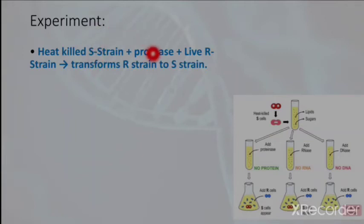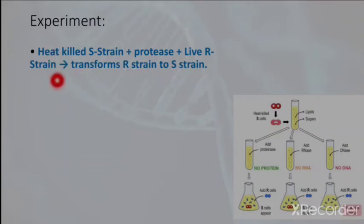Protease is an enzyme which is responsible for the digestion of proteins. They then took live R strain bacteria and injected the mixture into mice. The result was that it transformed the R strain into S strain, and the mice developed pneumonia and died. So even when proteins were digested with protease, the R strain was still transformed into S strain.